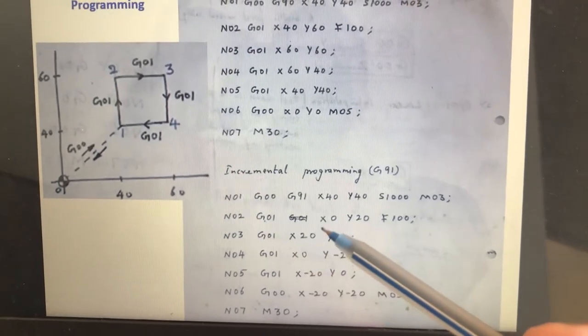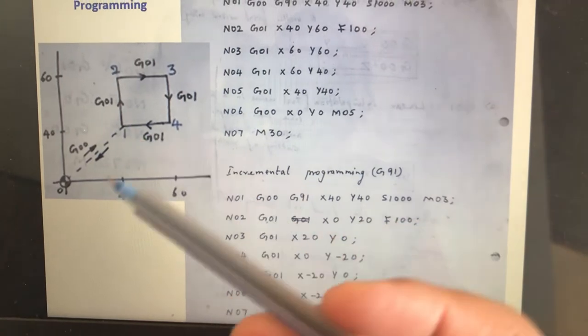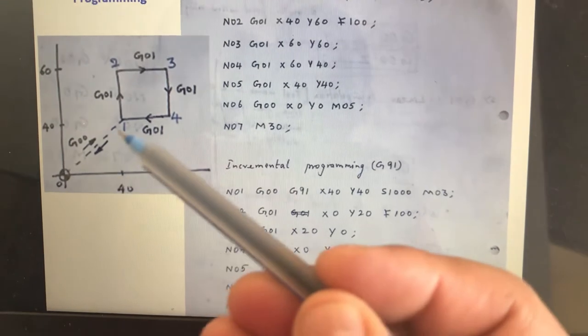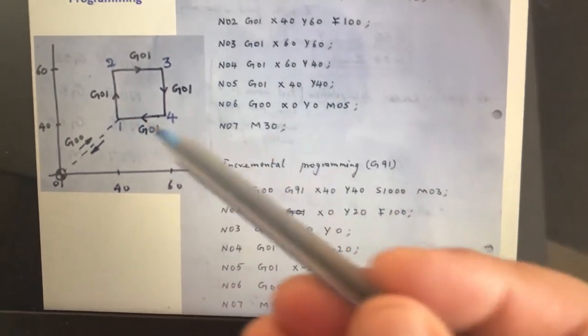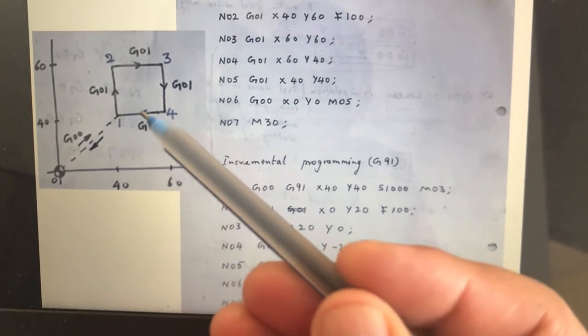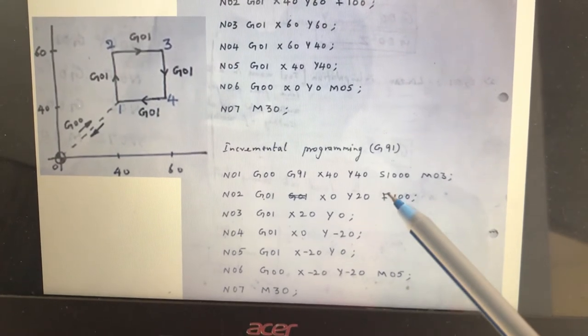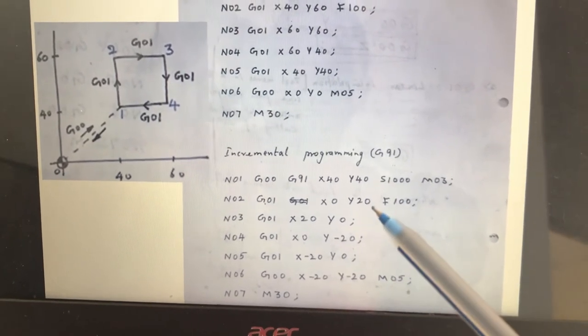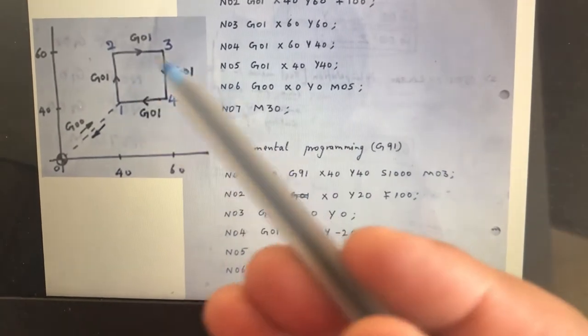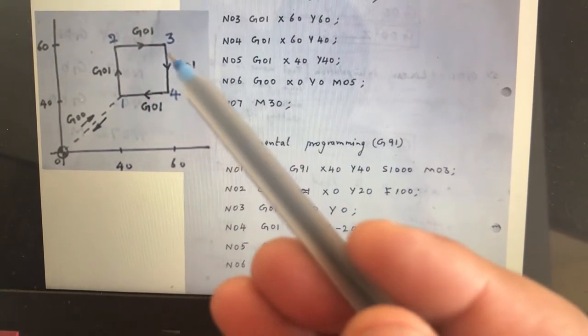This is G01. X is 0, Y is 20. It is at this point. First it is telling X40, Y40. So from here, G00 moves here. It is same. And from 1 to 2, this is assumed as the origin. So X is 0, Y is 20. X0, Y20, F. Here also, we should write Z minus 2. The Z always stands for depth of cut. And go to the point number 3. And what is the value here? So 2 becomes origin. So X is 20, Y is 0.